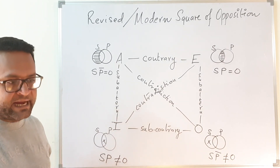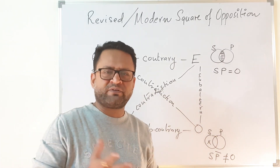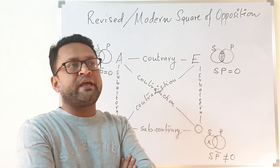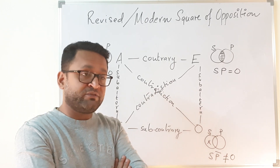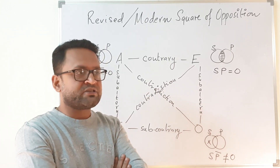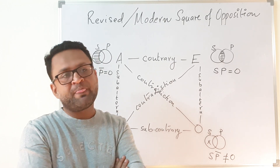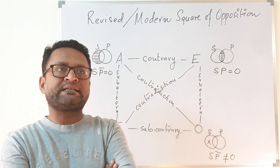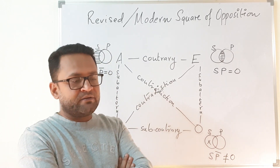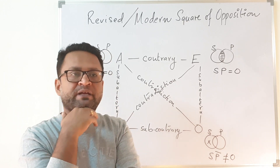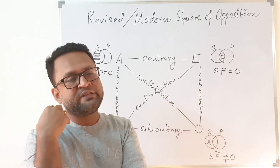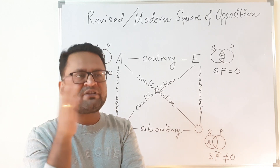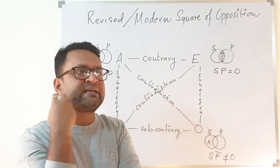In order to understand the modern square, there is an important philosophical concept. Toward the end of the 19th century and the beginning of the 20th century, there was a lot of discussion on a topic called existential import. Existential import asks: whenever we are talking about something, are we committing ourselves to the existence of the elements we are talking about?